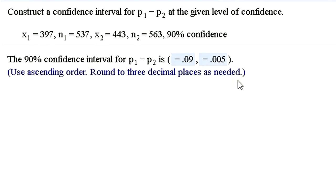So if we were going to interpret this, we would say, well, we can say with 90% confidence that the intervals from negative 0.09 to negative 0.005. So that means that we can say with 90% confidence that P1 is less than P2. If the confidence interval straddled 0, we couldn't say that with 90% confidence. We couldn't rule out the possibility of the two proportions being equal or even P1 being greater than P2.